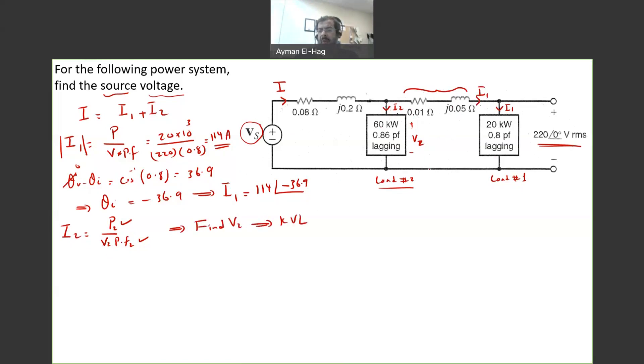Apply KVL in this loop. What you will have, you will have your V2 will equal to I1, which is 114 angle of minus 36.9 times this impedance, which is 0.01 plus j0.05. This will give me the voltage drop through the impedance, plus the voltage at the receiving end, which is the 220 angle of 0. I will do this calculation in details, but the rest just to—I will just give you the final answer. But please, you need to redo it yourself. And this applies for any circuit question that you have to try solving it before you look into the solution.